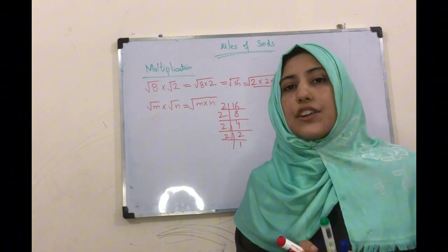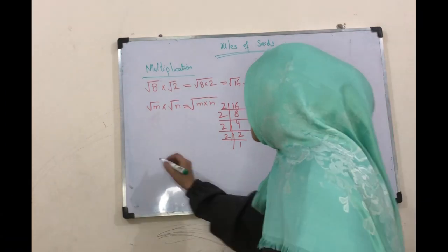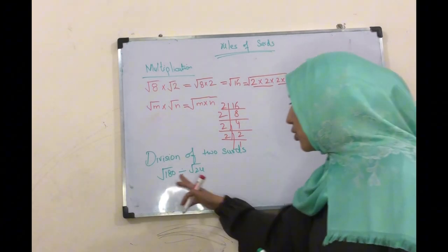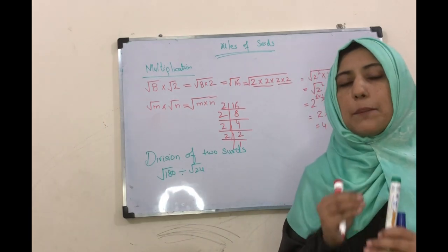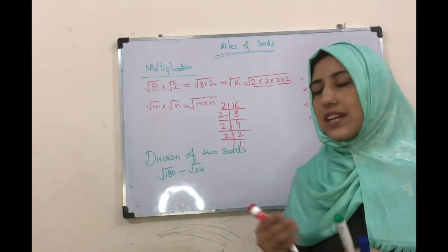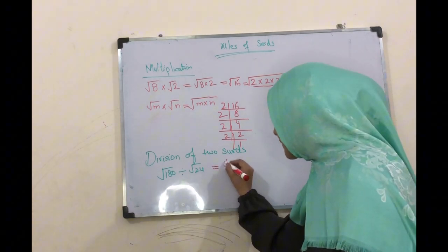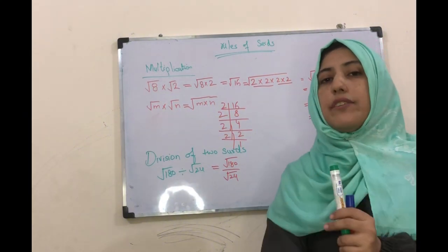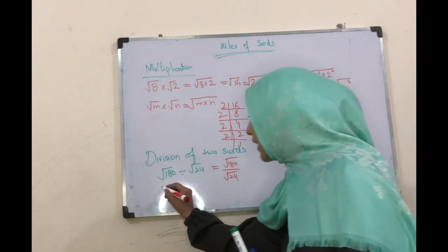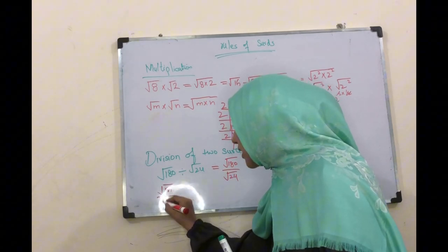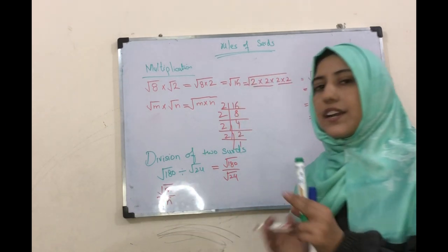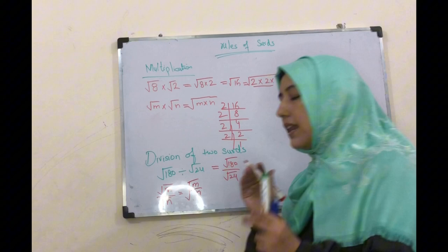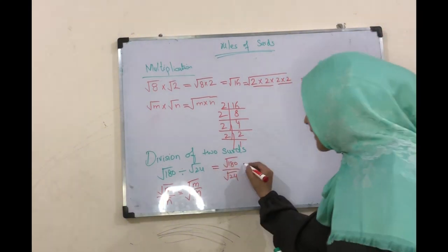اب بات کرتے ہیں division of two surds کی۔ یہ ہمارے پاس division میں surd ہے، اس کو کیسے simplify کرنا ہے۔ دو surds ہیں in the form of division۔ تو آپ کو پتہ ہے جب بھی ہمارے پاس divide کا sign آتا ہے تو ہم simplification کیسے کرتے ہیں۔ جب ہمارے پاس دو surds اس طرح divide ہو رہے ہیں تو ہم اس کو ایک square root میں لکھ سکتے ہیں۔